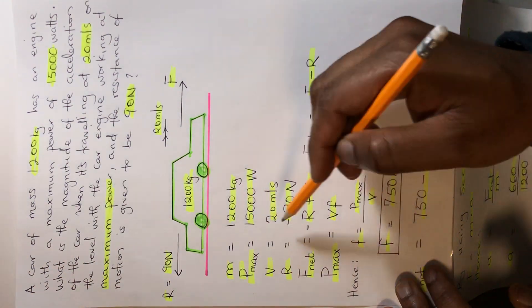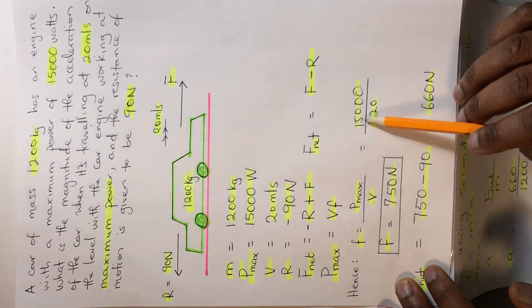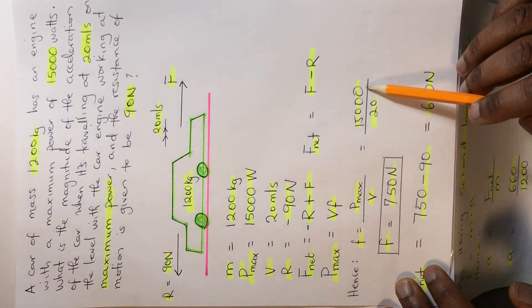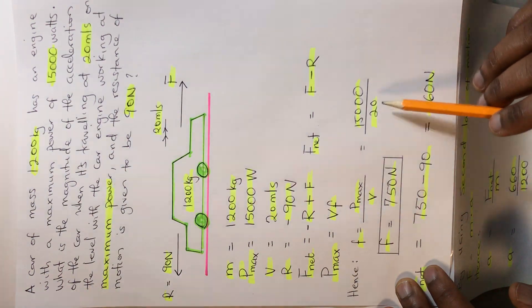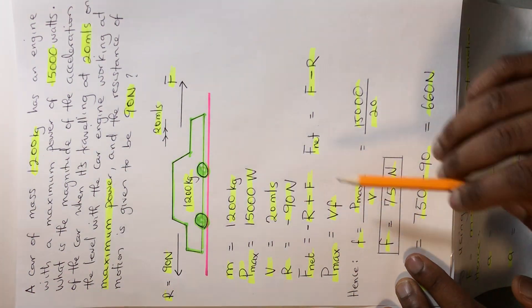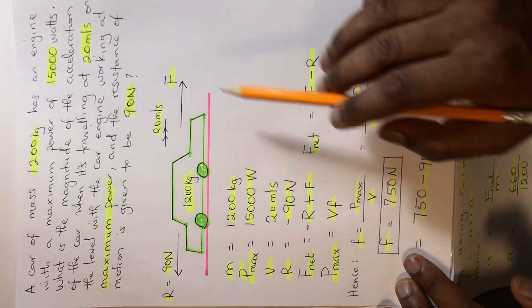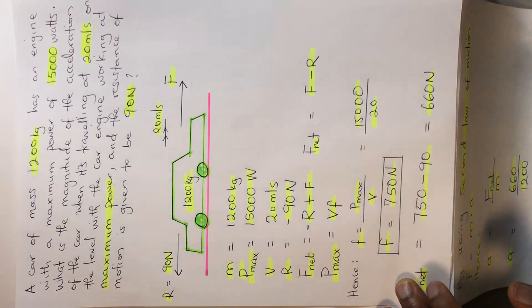Substituting our values, we have 15,000 over 20. Therefore, our driving force F equals 750 Newtons.